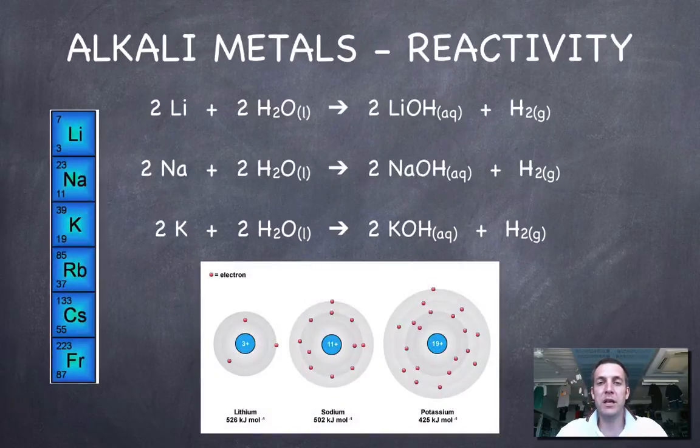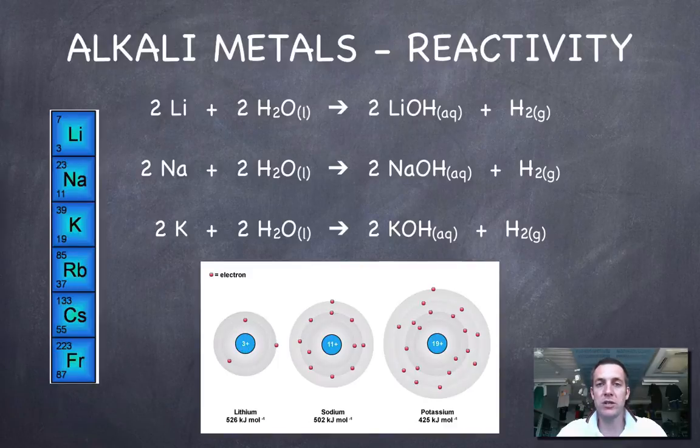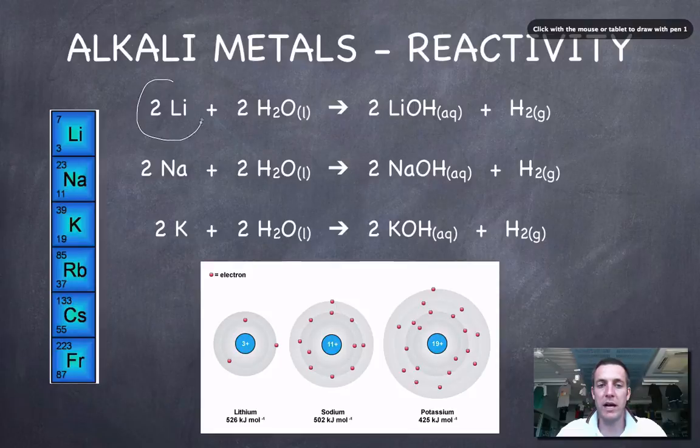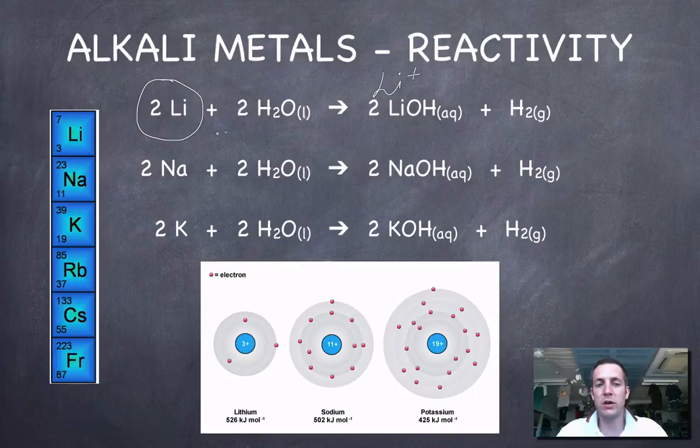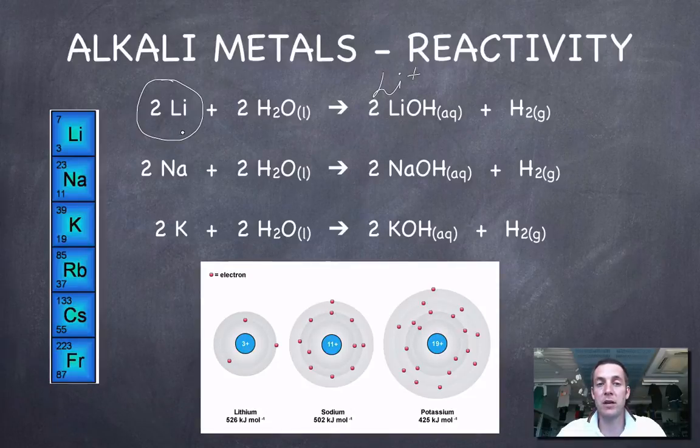If we think about how reactive these metals will be - which one's going to react most violently with water - let's think about what's actually going on. We're starting with metal atoms and turning them into metal ions, so we're removing electrons from the atoms. The reaction ought to happen more quickly if these electrons are easy to remove. We've got a measure of how easy electrons are to remove - the first ionization energy.